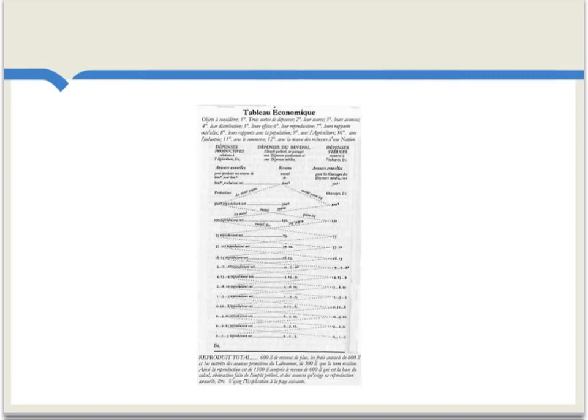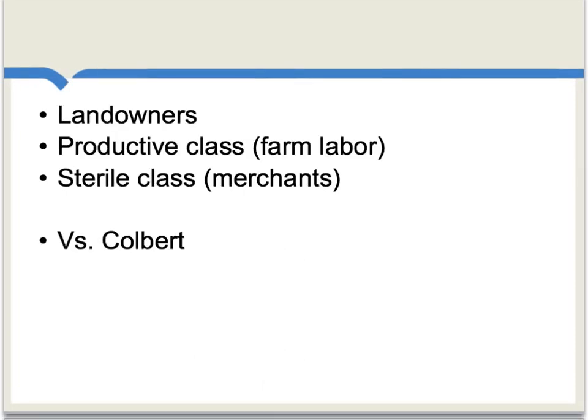Nonetheless, there are versions of the Tableau Économique online, and you can Google them if you'd like to take a closer look. In the Tableau, there are three major branches of economic activity. There are the landowners, there's what Quesnay calls the productive class, which is basically farm labor, and there's also what he calls the sterile class, which are traders and merchants.